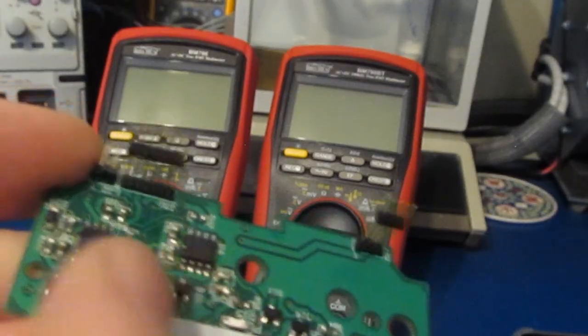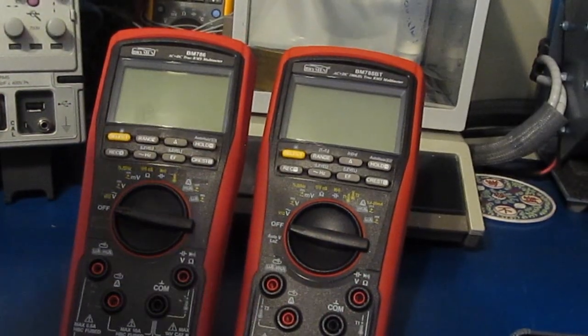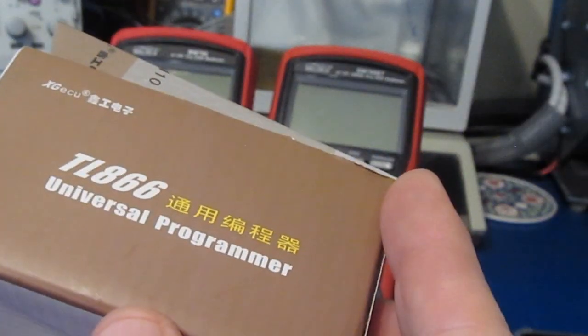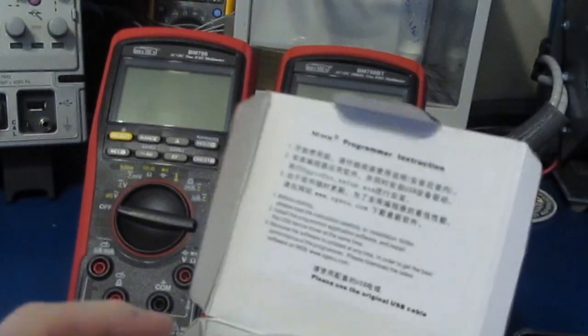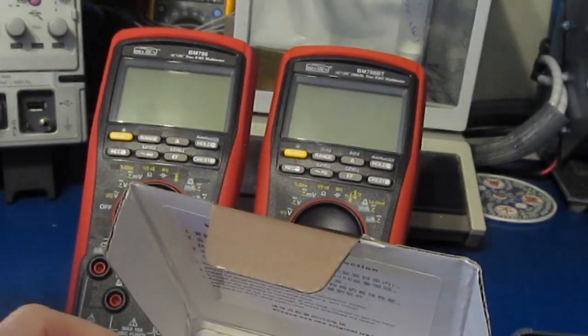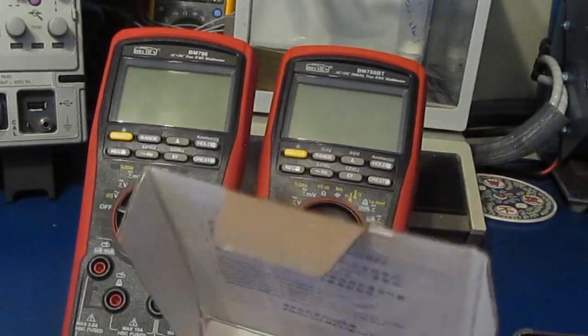Now what I did is I unsoldered these ICs and I have one of these really low cost programmers here. I used to have a decent programmer. It got taken out with a lightning strike here at the house, and this is what I bought to replace it.